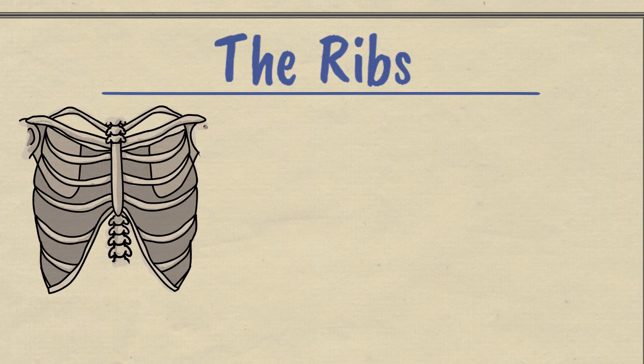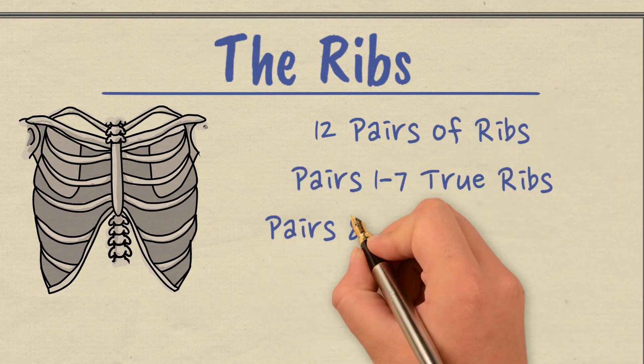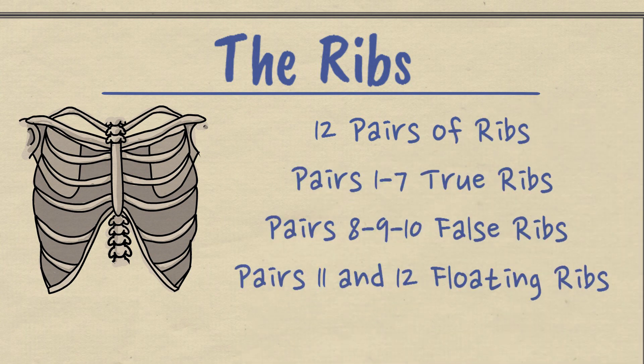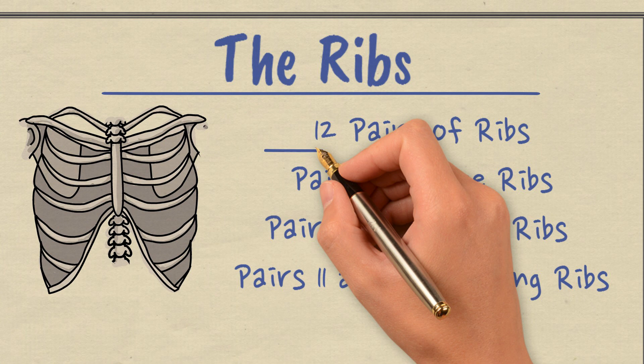So next it's the ribs, and maybe this is due on your paper. You have 12 pairs of ribs. Pairs 1 to 7 are true ribs, pairs 8, 9 and 10 are false ribs, they attach to the 7th pair, and pairs 11 and 12 are floating ribs.